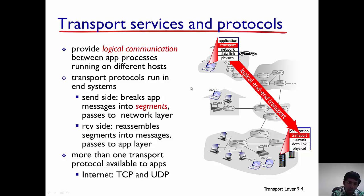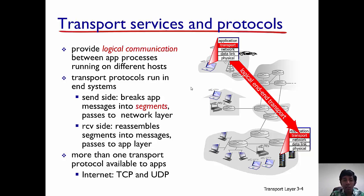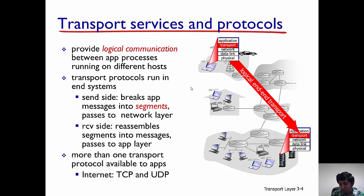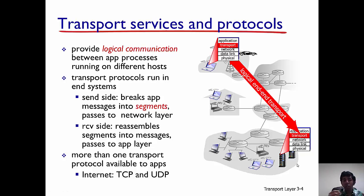What the end hosts are going to do is break the application layer messages into segments — this is the terminology we are going to use for the transport layer. Each of those application layer messages is broken into segments, and these segments are passed to the network layer. The network layer takes care of transporting these segments all the way from one host to the other, and at the receiver side these segments are reassembled into messages that are passed to the application layer.